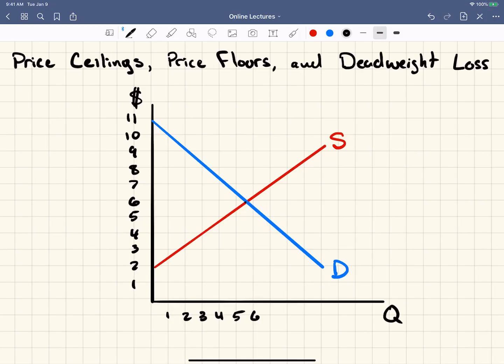A price ceiling is when the government sets a price that the market cannot rise above. So price ceiling, so normally if this is our market, right, normally the equilibrium would be right here at about six dollars.